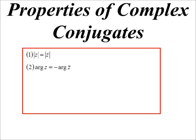Whereas the arguments, again because of the reflection in the x-axis, will be the negative of each other. So the argument of a complex number will be the negative of the argument of its conjugate.